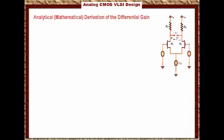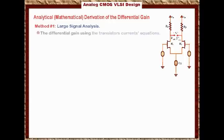So let's look at method one, which is the large signal analysis. Basically, the differential gain is defined using the transistor's current equations. And for simplicity, we will assume λ, which is the channel modulation index, to be zero. So we know the results here are approximated.